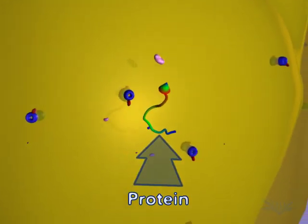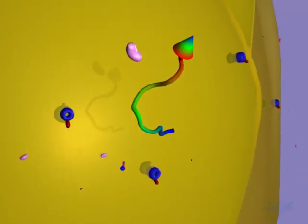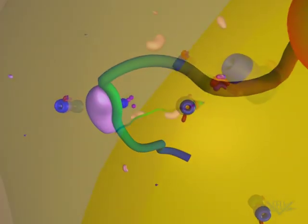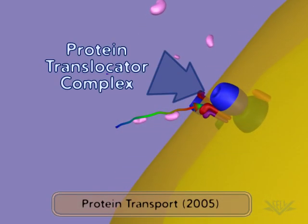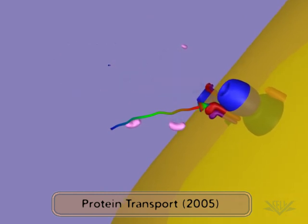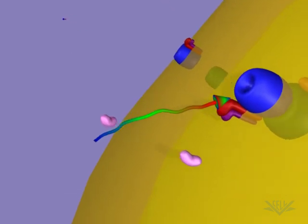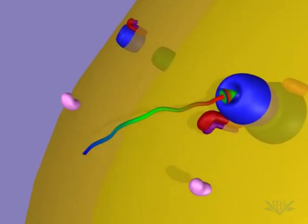Some proteins are produced with transit peptides. These are specialized sequences on the end of the protein, recognized by pores in the mitochondrial membrane. With the help of additional specialized proteins, the protein is delivered into the organelle. Transport to the chloroplast involves a similar process.